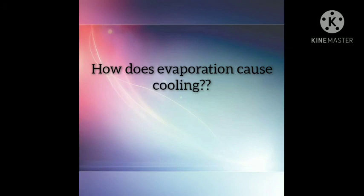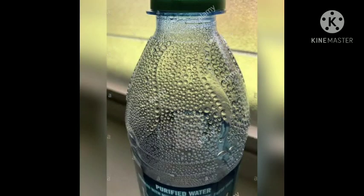How does evaporation cause cooling? In an open container, the liquid keeps on evaporating. The particles of liquid absorb energy from the surroundings to regain the energy lost during evaporation. This absorption of energy from the surroundings makes the surroundings cold. As seen in the picture: ice cold water in a bottle — soon we see water droplets on the outer surface of the bottle. The water vapor present in air, on coming in contact with the cold glass, loses energy and gets converted to liquid state, which we see as water droplets.